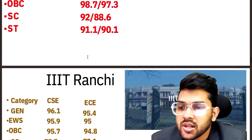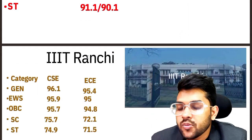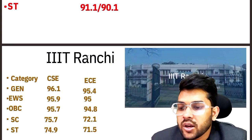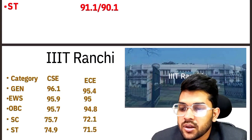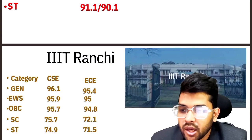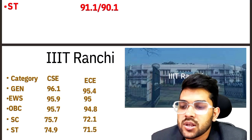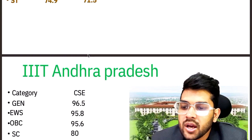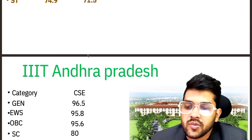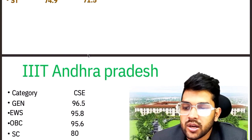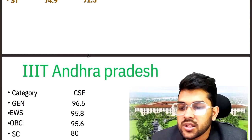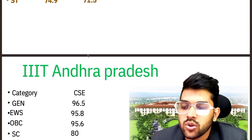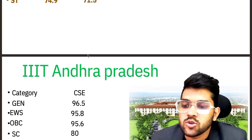For IIIT Ranchi — CSE: 96.1, 95.9, 95.7, 75.7, 74.9. EC cutoffs available on screen. For IIIT Andhra Pradesh: 96.5, 95.8, 95.6, 80, 78.2 for General, EWS, OBC, SC, ST — that is for the CSE branch.